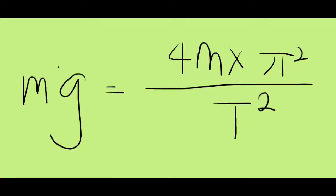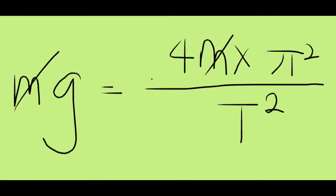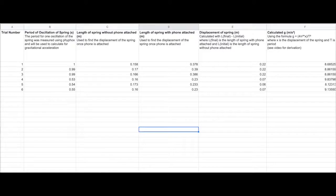Now plugging in the formula we found for k earlier, back into the equation negative kx equals mg, we have the equation 4mx pi squared over T squared equals mg. Notice that the masses cancel out to give 4x pi squared over T squared equals g. We have x, we have T. Now we can solve this equation to find the gravitational acceleration g.